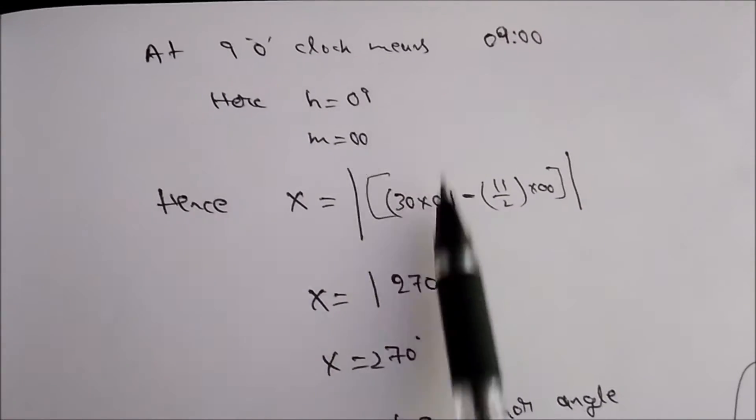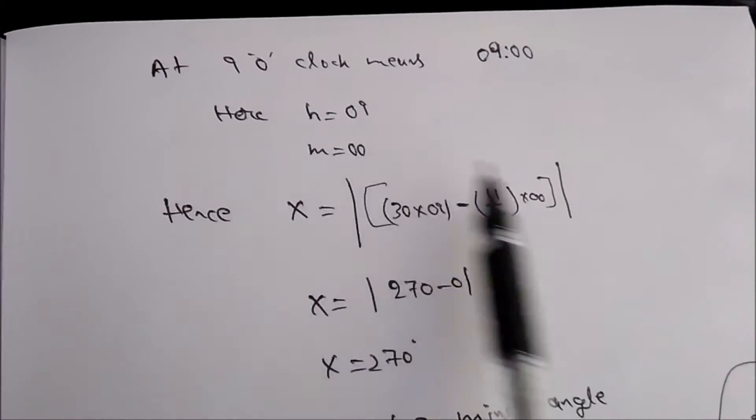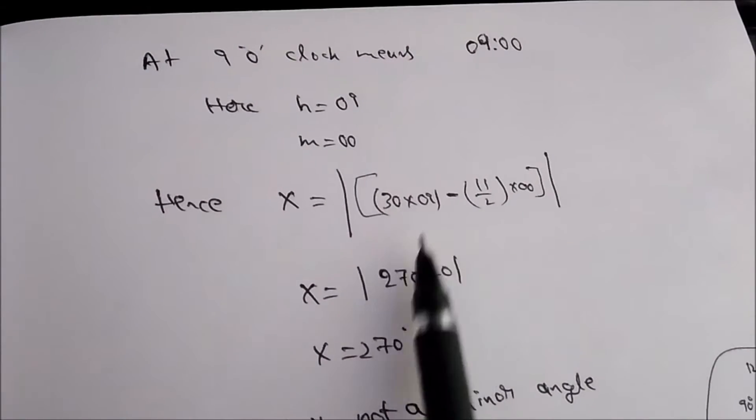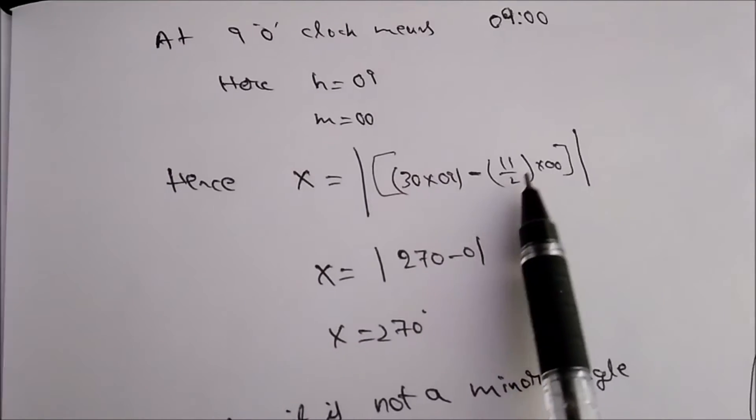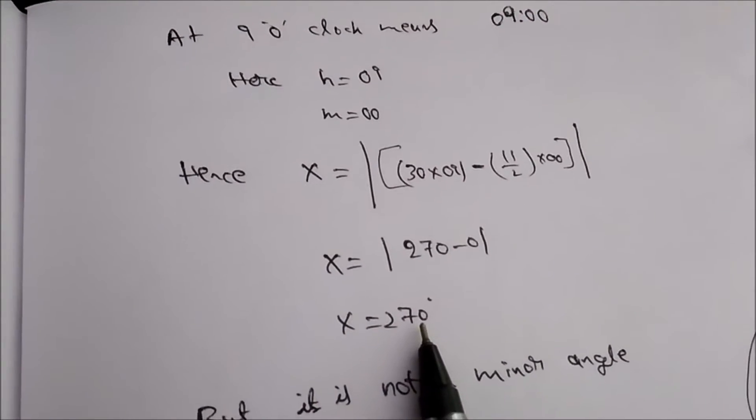30 into 9 gives 270. 11 by 2 into 0 gives 0, so X is equal to 270 degrees. But it is mentioned we need to find the minor angle.